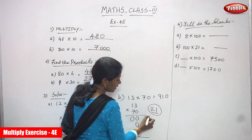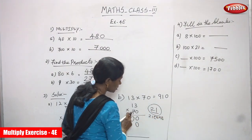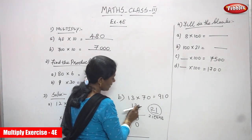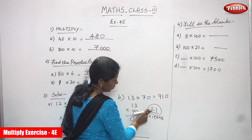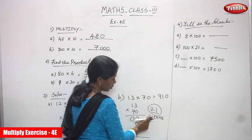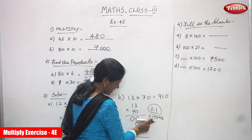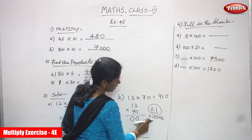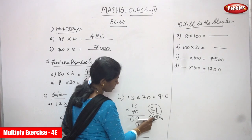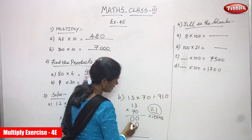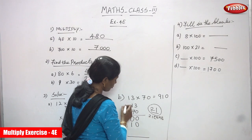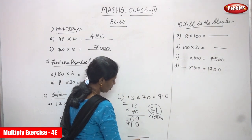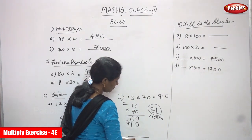You are multiplying 7 tens by 3, giving 21. That is 21 tens — 1 ten and 2 hundreds. Write the 1 in the tens place and carry the 2 to the hundreds. Then 7 into 1 is 7, plus 2 carry gives 9. Write 9 there.